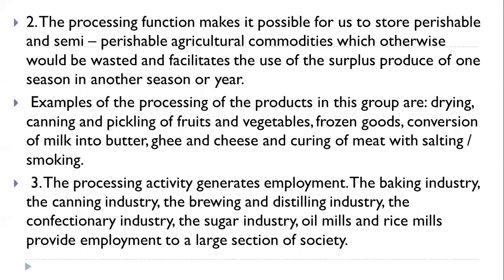Advantage number two: the processing function makes it possible for us to store perishable and semi-perishable agricultural commodities which otherwise would be wasted, and facilitates the use of surplus produce of one season in another season or year. Examples of products in this group are drying, canning, and pickling of fruits and vegetables, frozen goods, conversion of milk into butter, ghee, and cheese, and curing of meat by salting and smoking.